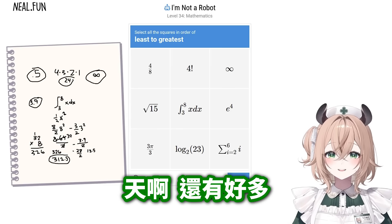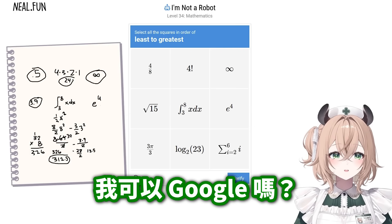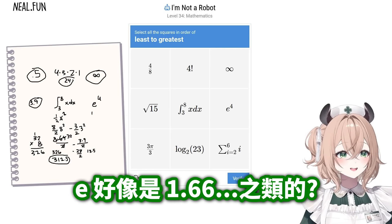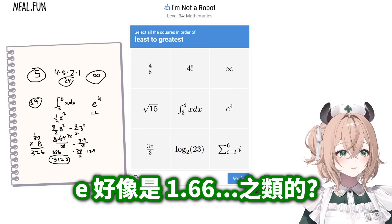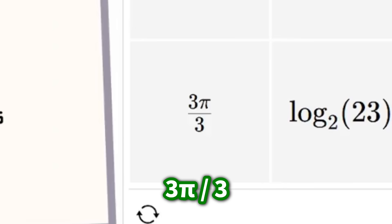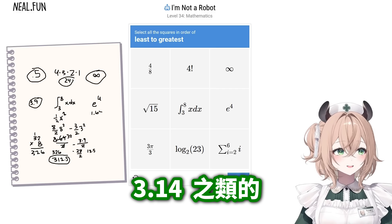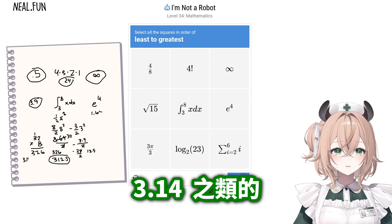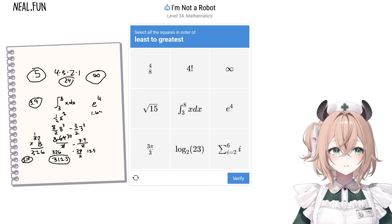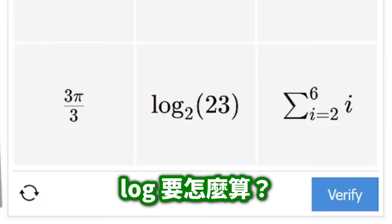Oh my gosh, wait — there's more. e to the 4th. Am I allowed to Google? I don't remember what e is — e is like 1.6-something, I think. 3 pi over 3, that's just pi, 3.14 etc.